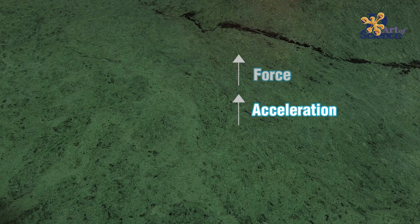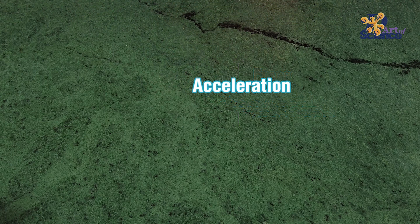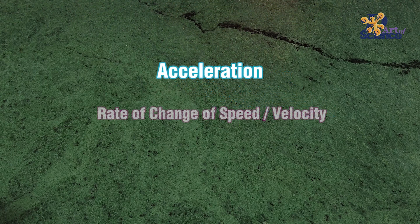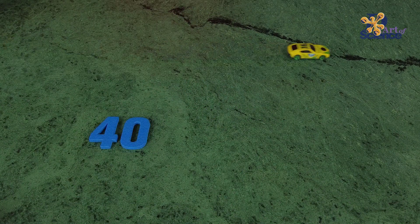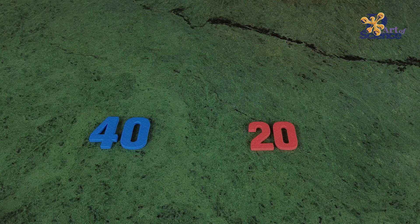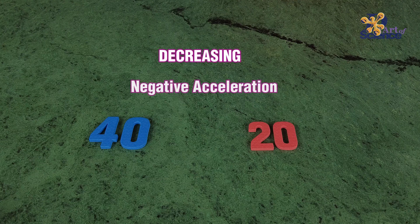But what is acceleration? Acceleration is nothing but the rate of change of speed. For example, this car changes its speed from 40 kilometers per hour to 20 kilometers per hour in a given time — the speed is decreasing, and therefore we can see that the acceleration is negative.